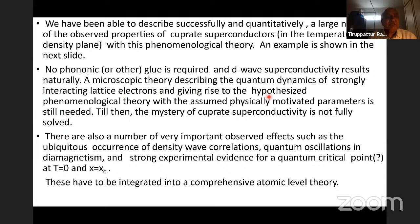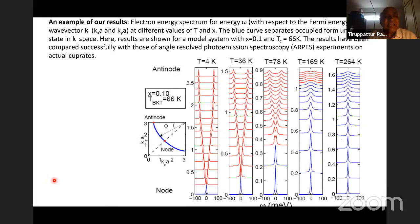With this phenomenological model, we have been able to describe successfully and quantitatively a very large number of the observed properties of cuprate superconductors in the temperature hole density plane. I will show an example in the next slide. In this model, no phononic glue is required and d-wave superconductivity emerges naturally. But obviously, this is not a complete theory. What we need is an atomic level theory, which describes the quantum dynamics of electrons, interacting lattice electrons, and which gives rise to the hypothesized phenomenological theory with the assumed physically motivated parameters. We don't have it yet. The mystery of cuprate superconductivity is not fully solved. There are, in addition, a very large number of important observed effects, such as the ubiquitous occurrence of density wave correlations in these superconductors, quantum oscillations in the diamagnetic susceptibility of these superconductors.